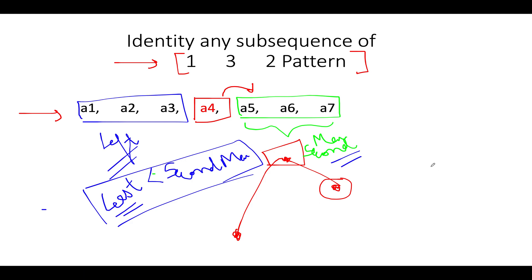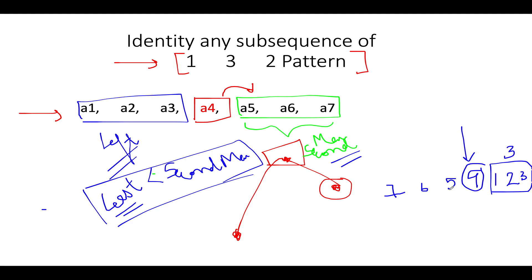Let's take both examples. First: [7, 6, 5, 9, 1, 2, 3]. The maximum value is 9, which acts as a4. The second max towards the right of 9 is 3. The least value towards the left of 9 is 5. When we compare, the least value (5) is greater than the second max (3). As a result, we return false.